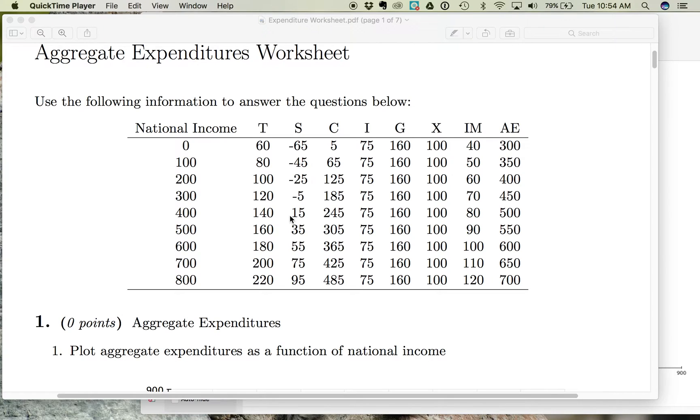So let's start with consumption spending. Consumption spending is spending by households. We're looking at the goods and services that households buy. The goods include durable goods, non-durable goods, and semi-durable goods.